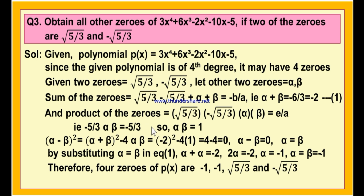Now let us find the product of all the zeros. The 1st zero is √(5/3), 2nd is -√(5/3), 3rd is alpha, and 4th is beta. The product of all the zeros equals e/a, where e is the constant term divided by the coefficient of x⁴. Plus into minus gives minus, so √(5/3) × -√(5/3) = -5/3. Therefore, -5/3 × alpha × beta = -5/3. Solving, alpha times beta equals 1.